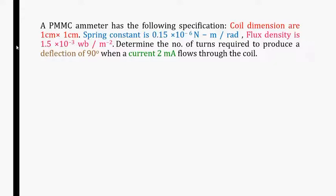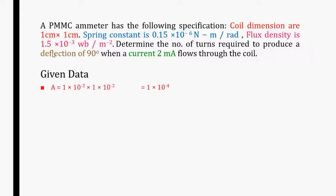A permanent magnet moving coil meter has the following specifications. Given the specifications, we are supposed to determine the number of turns required to produce a deflection of 90 degrees when a current flows through the coil. The coil dimension is 1 cm x 1 cm, and since all other parameters are scaled in meters, we convert this to get an area of 1 x 10^-4 meter square.